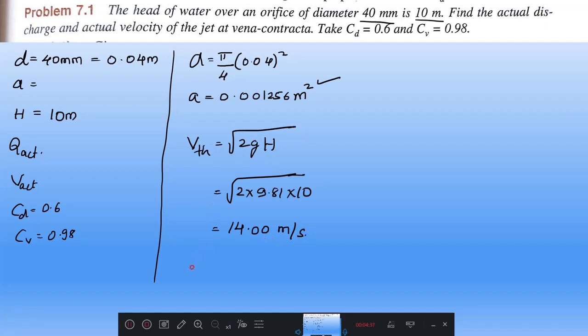V theoretical you got. If you get V theoretical, you can calculate Q theoretical. Q theoretical equals area into V theoretical, then area is 0.001256 into 14. Then you will get theoretical discharge. Theoretical discharge will be 0.01758 meter cube per second.